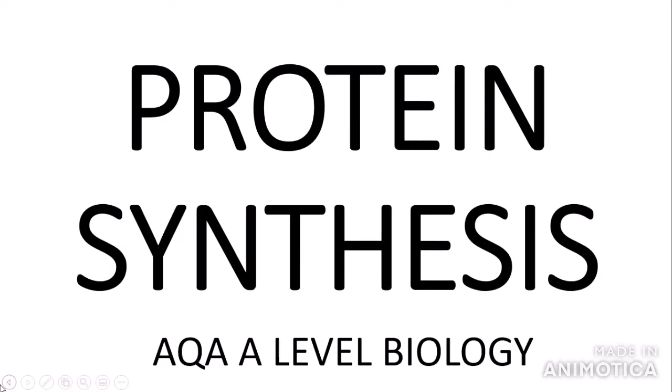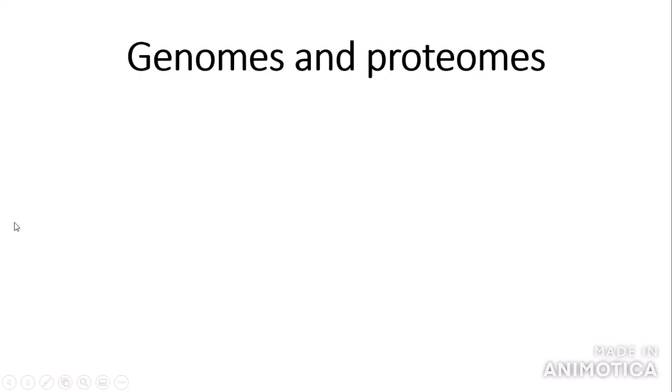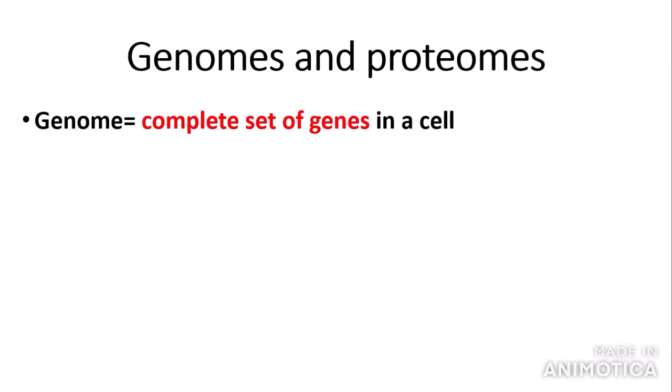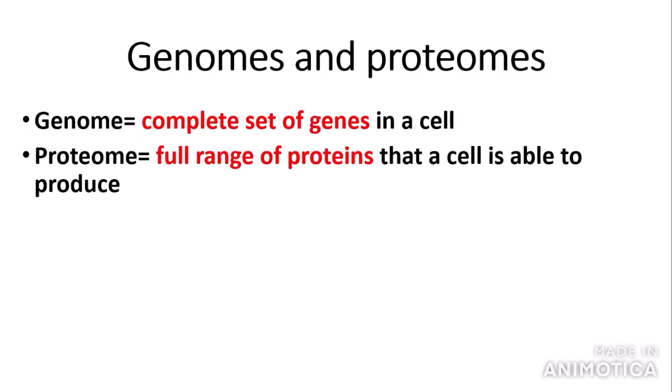Let's get started. First I'm going to introduce the concept of genomes and proteomes. A genome is the complete set of genes in a cell, or the genetic constitution of a cell — every single gene in your DNA, so the full DNA sequence inside each cell. You have a complete genome in each of your cells. A proteome is the full range of proteins that a cell is able to produce from the genome — the full range of proteins encoded by the DNA-based sequences.